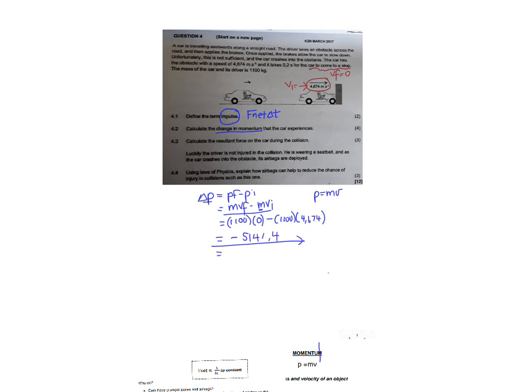And we do not leave our answers as a negative. We have taken motion to the right as positive. So 5141.4. Change in momentum or momentum is measured in kilogram meter per second. We get that from our equation kg meters per second. The negative indicates to us that the change in momentum is to the left. And that is your final answer for 4.2.